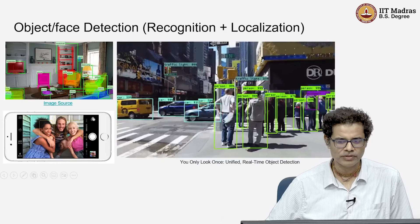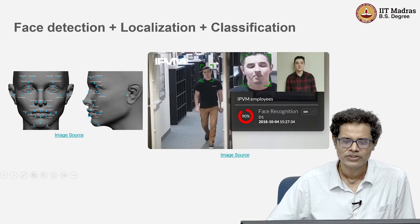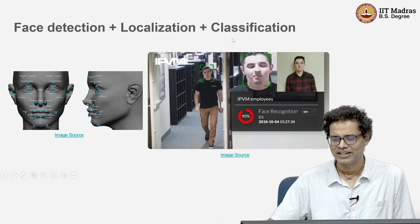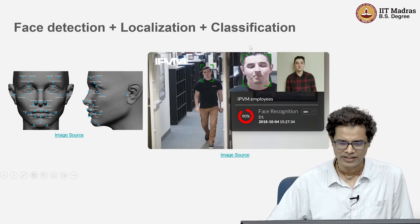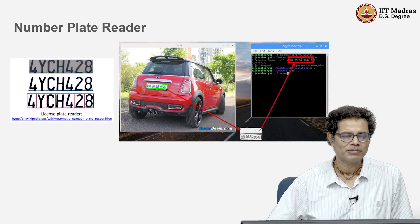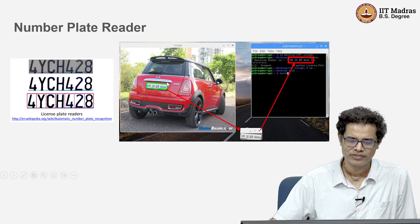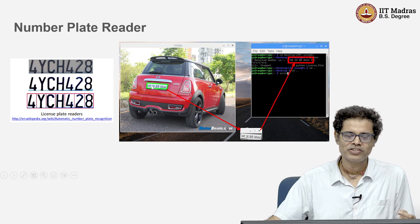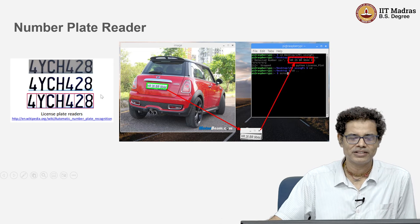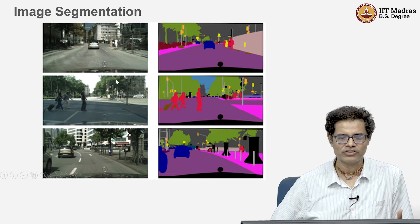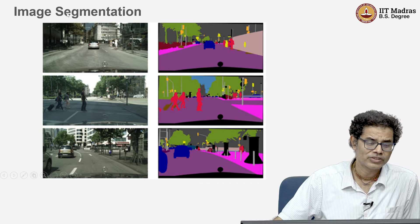Another task related to faces is to detect, localize, and classify them, which is used for security cameras, passport offices, and similar applications. Number plate reading is also another example where vision has a use case — given an image, we localize the plate and recognize each of the letters. These are all very practical examples of problems we would like to solve.